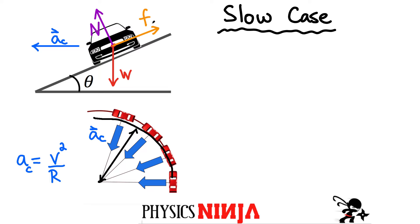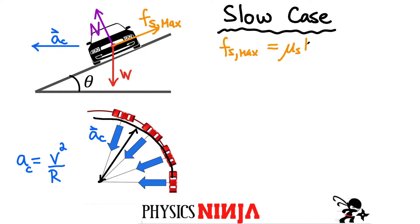The force of friction in this particular case tries to oppose that motion, so if you look at it from the cross-sectional view I have to place the force of friction going up the ramp. This is actually going to be the force of static friction because there is hopefully no motion along the direction of the ramp. Our normal force is always perpendicular to the ramp.